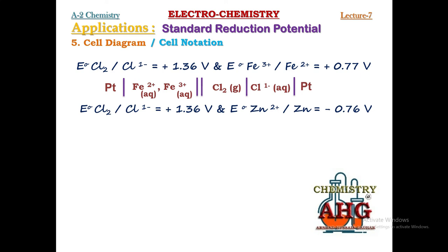Next example: zinc and chlorine half-cells. Zinc is the anode because its standard reduction potential is mathematically lesser, so its reaction is reversed. We start from Zn solid to Zn²⁺ — change in physical state, so a vertical line is used. Zinc is a metal and a good conductor, so no platinum is needed. Then a double vertical line for the salt bridge, and the chlorine half-cell remains as written in the previous case.